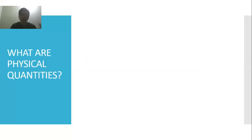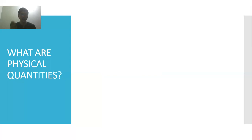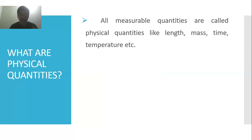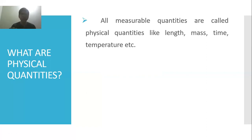If you look at the name and make an assumption, you could say those quantities which are physical, or those quantities which we can see by naked eyes — but these are just assumptions. The actual definition is: all measurable quantities are called physical quantities, like length, mass, time, temperature, etc. Those quantities which you can measure or count are called physical quantities.